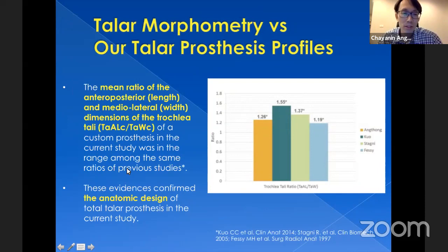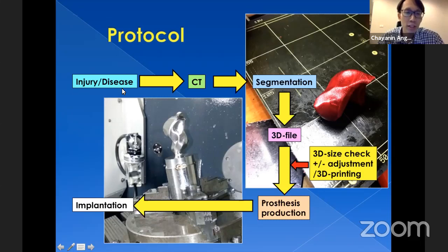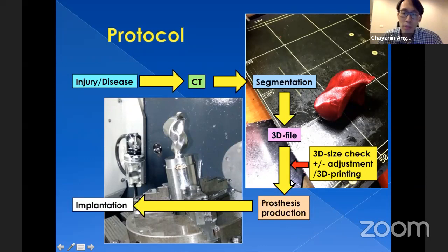These findings confirm the anatomic design of the total talus prosthesis. For the protocol, when I identify a case needing talus prosthesis replacement, I send the CT of the contralateral talus and have my engineer do the segmentation — converting the DICOM CT data to a 3D file. Then we apply the mirroring technique using CAD, check the size, and adjust the shape. We can also do 3D printing to verify the size and shape. When satisfied, we proceed to prosthesis production using CNC — computer numerical control milling based on the 3D file — and then implantation after sterilization.